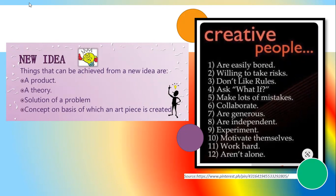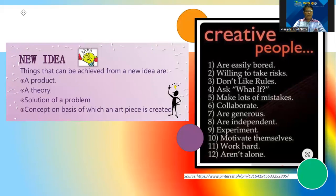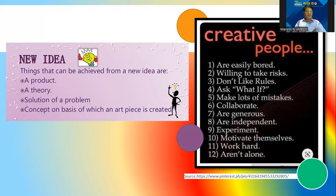What is best is that we need to produce a new idea. The things that can come from a new idea include a product, a theory, a solution to a problem, or a concept on the basis of which an art piece is created.